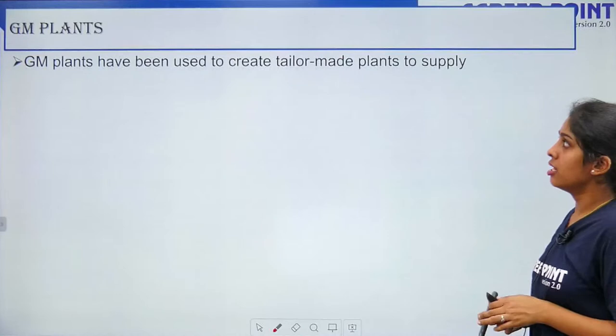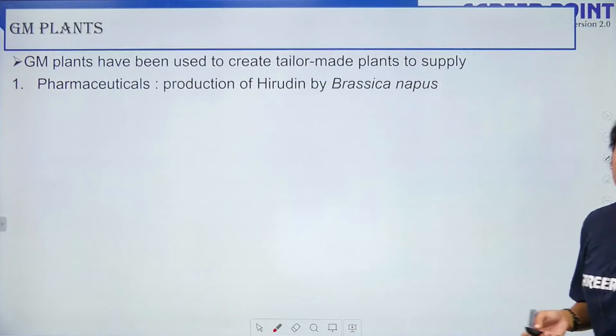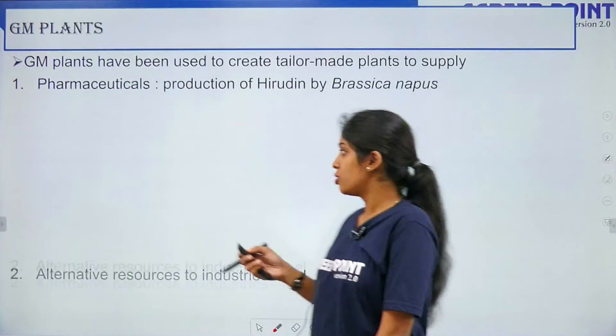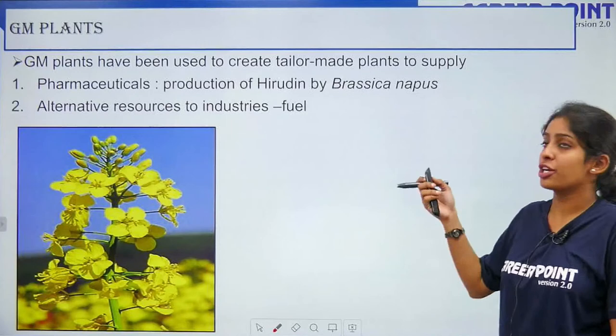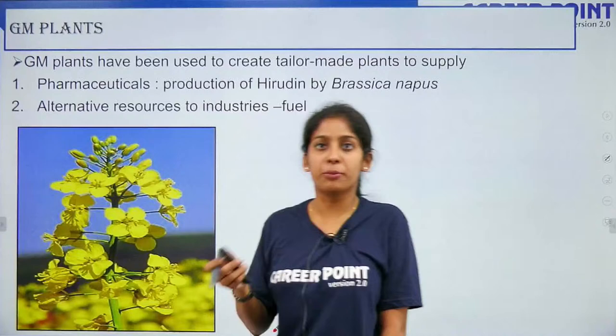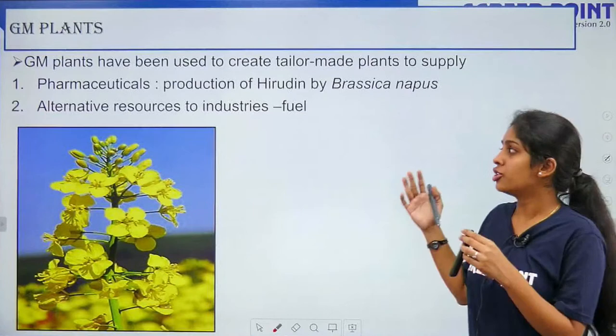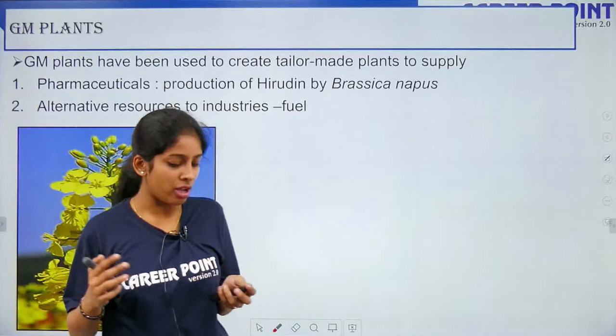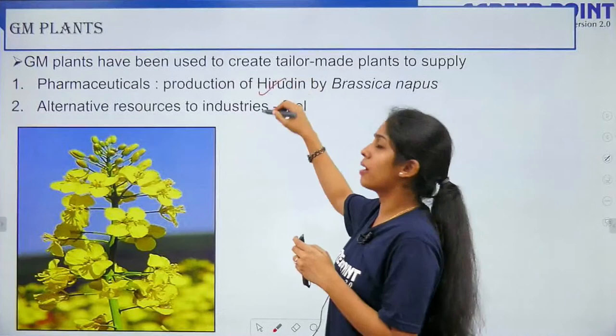GM plants are widely used in the pharmaceutical industry for the production of hirudin by Brassica napus — a particular type of plant used to produce hirudin as a recombinant or therapeutic protein. Not only to produce rice and tomato, but also in the pharmaceutical field your transgenic plants are modified. Apart from that, alternate production of fuel — so many ways your plants are being modified.